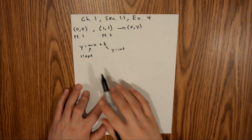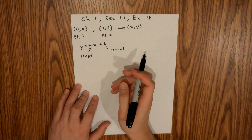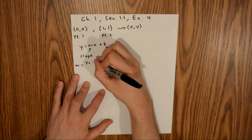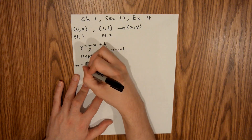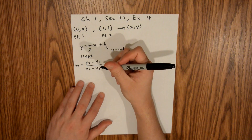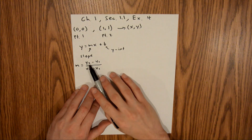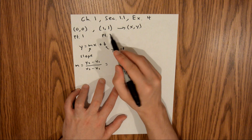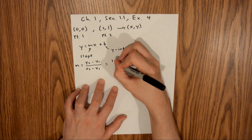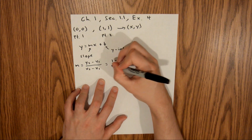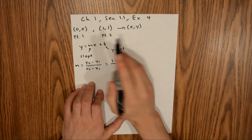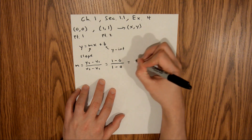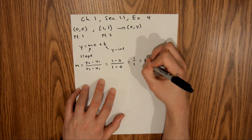We can compute the slope first because we have all the information we need. The slope is equal to y2 minus y1 over x2 minus x1. So y2, which is 1, minus y1, which is 0, over x2, which is 1, minus x1, which is 0. This equals 1 over 1, which equals 1.